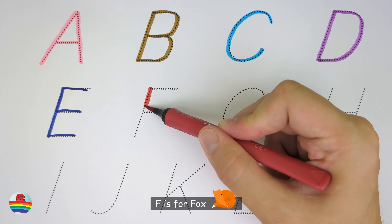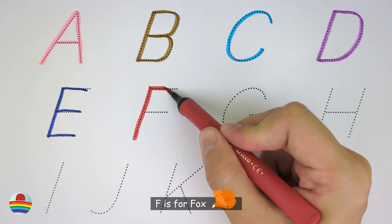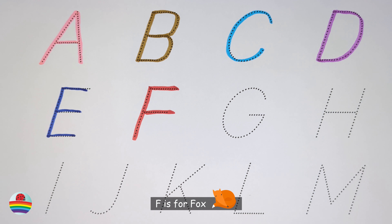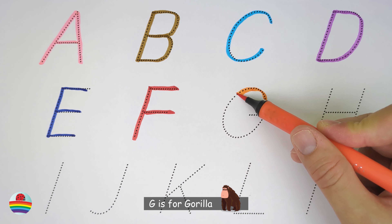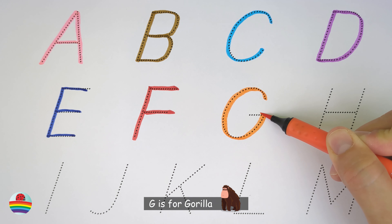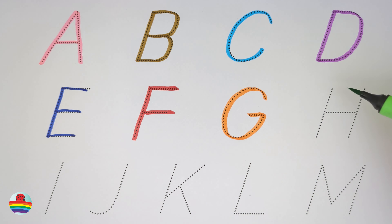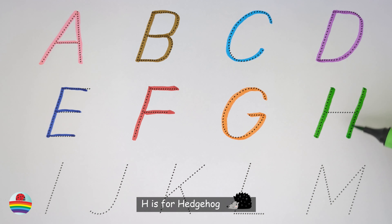F. F is for fox. G. G is for gorilla. H. H is for hedgehog.